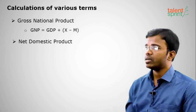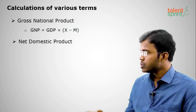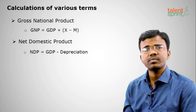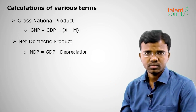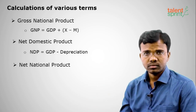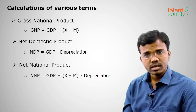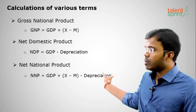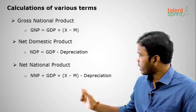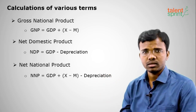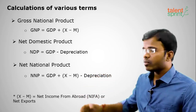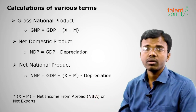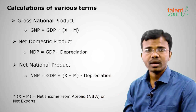Net Domestic Product (NDP) equals GDP minus depreciation, where depreciation represents wear and tear during production. Net National Product (NNP) equals GDP plus X minus M minus depreciation, which can also be written as GNP minus depreciation or NDP plus X minus M. In questions, X minus M may appear as NIFA or net exports — all are the same.